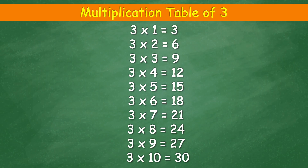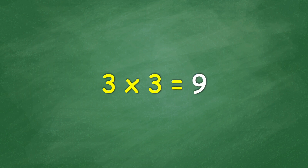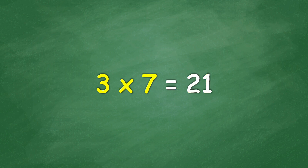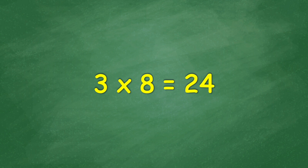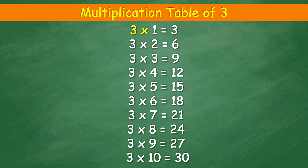Multiplication Table of 3. 3 x 1 equal 3, 3 x 2 equal 6, 3 x 3 equal 9, 3 x 4 equal 12, 3 x 5 equal 15, 3 x 6 equal 18, 3 x 7 equal 21, 3 x 8 equal 24, 3 x 9 equal 27, 3 x 10 equal 30.